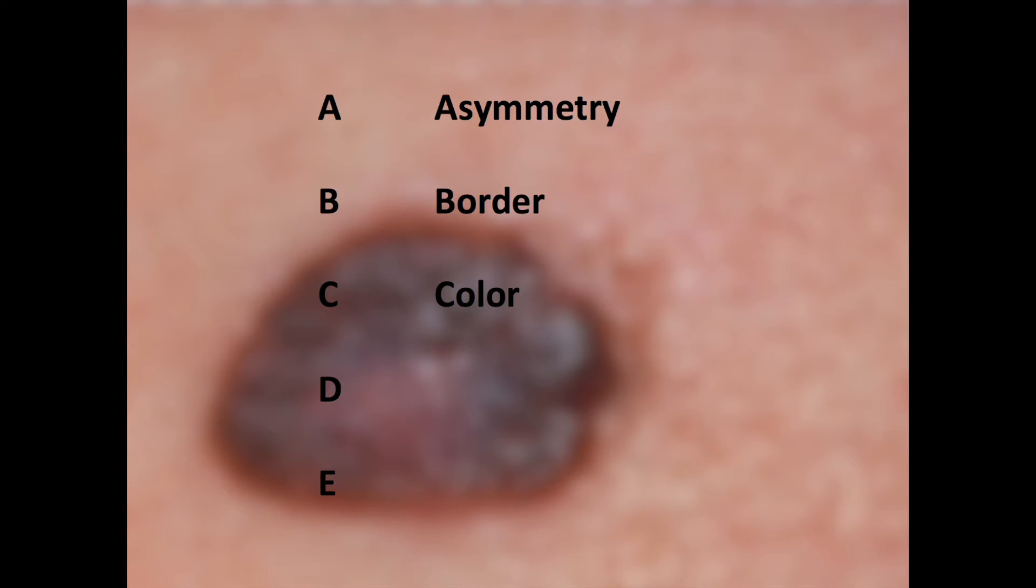D is diameter. A mole with a diameter of over 6 mm is suspicious for melanoma. E stands for evolution. Did the mole change in size, shape, or color? Or are there changes in symptoms such as bleeding, oozing, or itching?